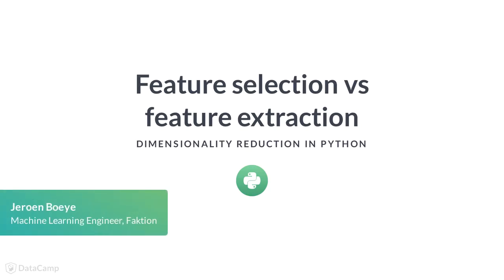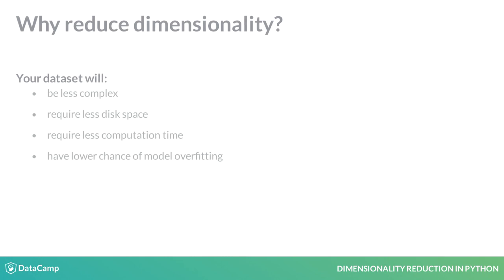Reducing the number of dimensions in your dataset has multiple benefits. Your dataset will become simpler and thus easier to work with, require less disk space to store, and computations will run faster. In addition, models are less likely to overfit on a dataset with fewer dimensions.